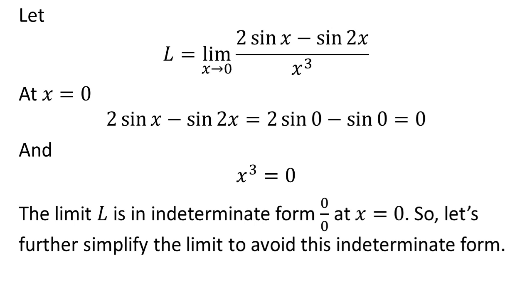At x is equal to 0, 2 times sin of x minus sin of 2 times x is equal to 0, so the limit is in indeterminate form 0 upon 0. So let us further simplify the limit to avoid this indeterminate form.